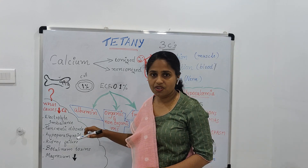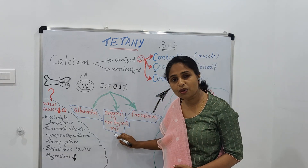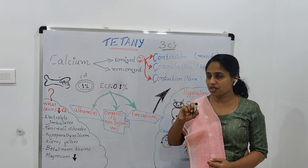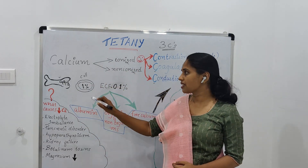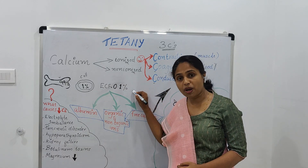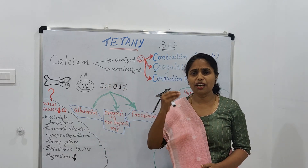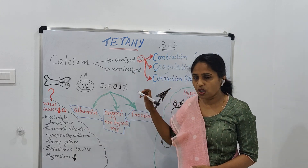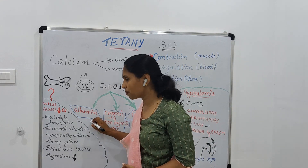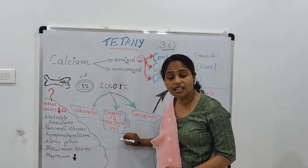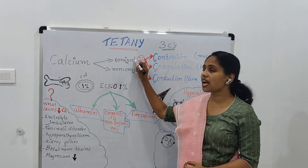The extracellular fluid calcium, though a very small amount, can be divided into three types: calcium bound with albumin or plasma, calcium bound with organic and non-organic ions, and free calcium. This free calcium is considered as ionized calcium.